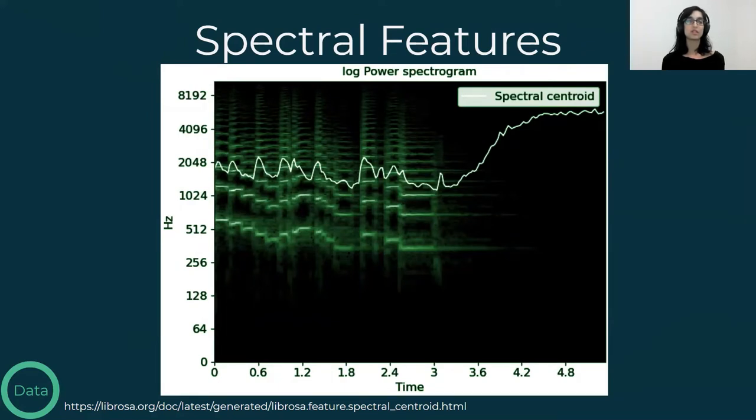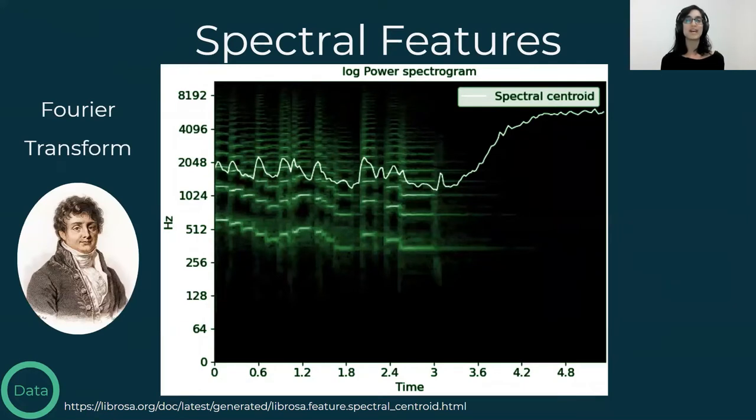Spectral features include the spectral centroid, which is the weighted mean of the frequencies in the signal, with their magnitudes as the weights. For some of you, it might make sense to think about it as the center of mass of the spectrum. So how do we get those frequencies and magnitudes? We have a very nice function, called Fourier transform, that extracts the frequencies from a given signal.